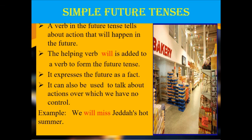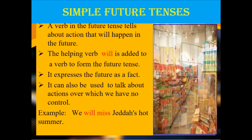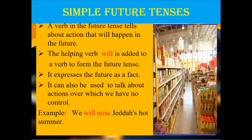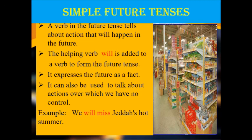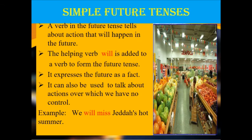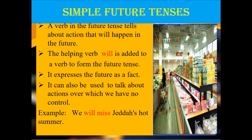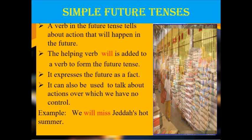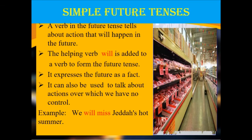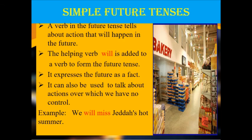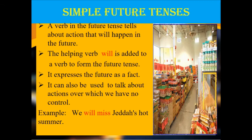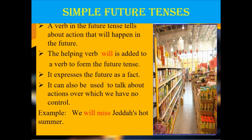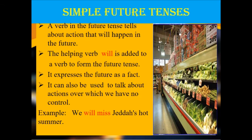Let's look at the last type of tense, which is the future tense. A verb in the future tense tells about an action that will happen in the future. The helping verb 'will' is added to a verb to form the future tense. It expresses the future as a fact and can also be used to talk about actions over which we have no control. For example: We will miss Jida's hot summer. Because we are forming the future tense, we need the helping verb 'will' alongside the verb 'miss,' which is why we use both 'will' and 'miss' to make our future tense verb.